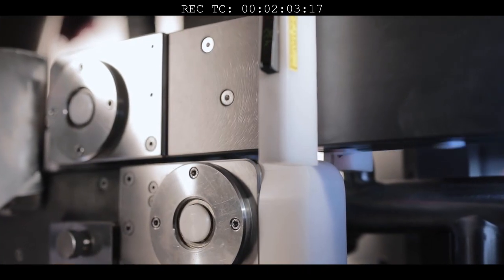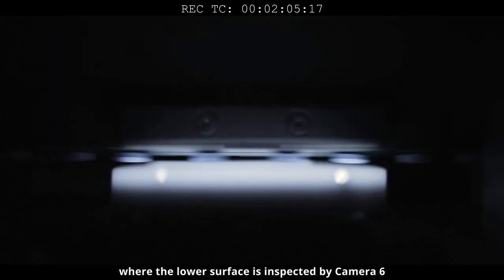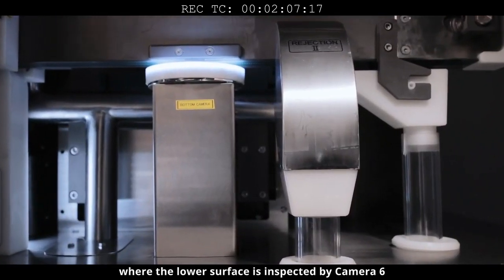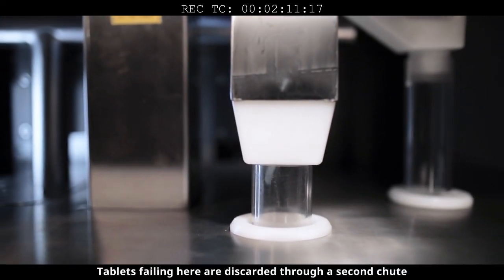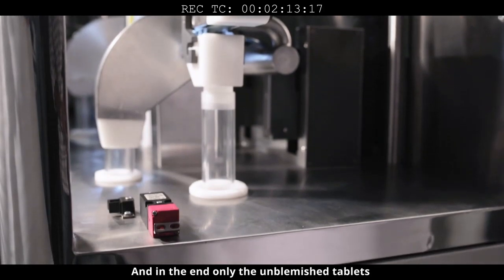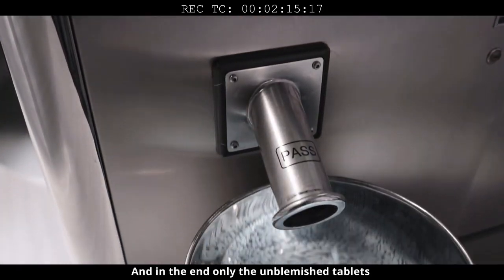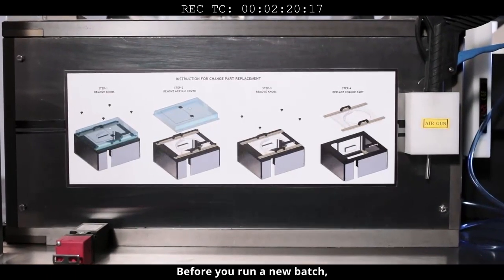The filtered feed next moves on to conveyor two, where the lower surface is inspected by camera six. Tablets failing here are discarded through a second shoot. In the end, only the unblemished tablets pass the Netra test.